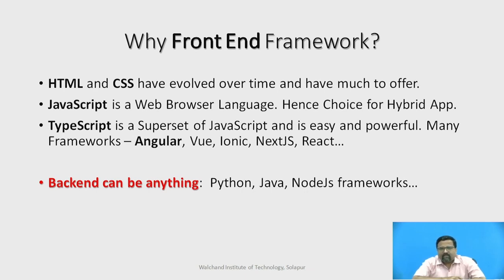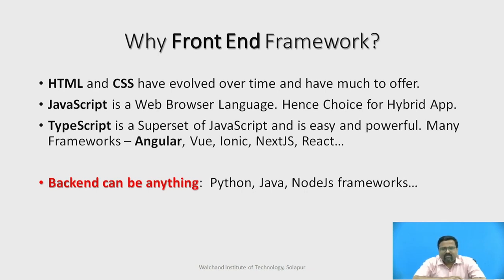Basically, when we interact with the computer — which is called Human-Computer Interaction — there are many interfaces available. The most common are the Command Line Interface and the Graphical User Interface. In a Graphical User Interface, we have windows and different UI elements such as buttons, text boxes, and so on. We interact with those GUI components using a mouse, keyboard, joystick, or any input device.